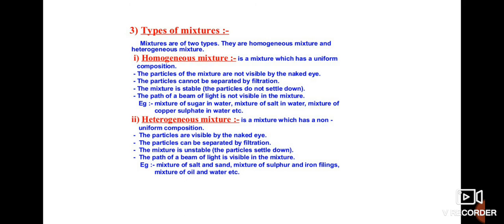Heterogeneous mixtures have a non-uniform composition. Since they are non-uniform, particles are thoroughly visible with the naked eye. For example, in a mixture of salt and sand, you can identify which part is salt and which is sand, and you can separate them by filtration. These mixtures are unstable — if kept undisturbed, the particles will settle at the bottom. If you pass a ray of light through such a mixture, the path of the beam is visible because it shows the Tyndall effect.